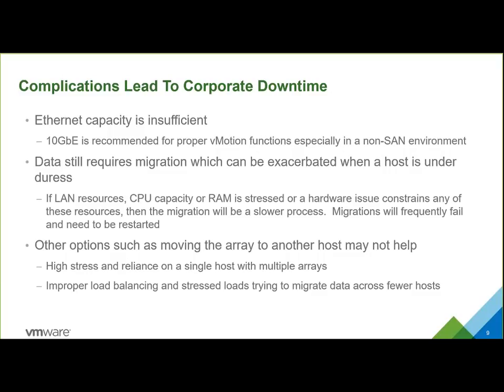Corporate downtime — a one-gig network really doesn't cut it. It can work if it's completely isolated on its own hardware, but a shared one-gig VLAN typically does not cut it. Ten gig is better. When you're in a direct-attached model, data still needs to be moved when you're trying to get it to a new host. The goal is to get all the hosts to see all of the storage, so when you're stressed these migrations are going to be slow. Other options, like simply plugging it into another host, usually strain the new host as well.